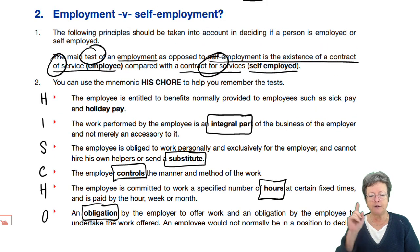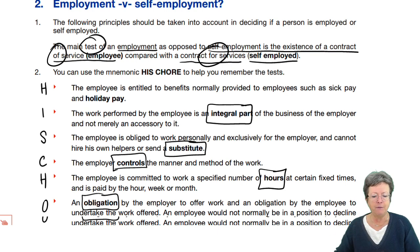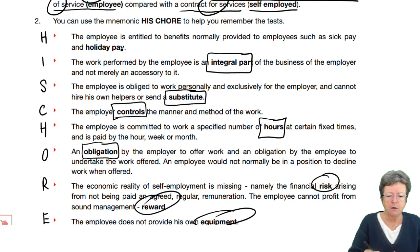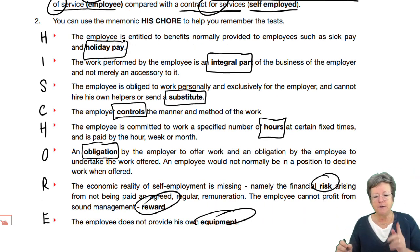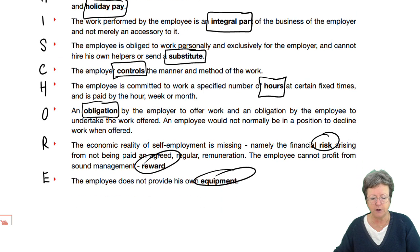So these are the two main things you need to be aware of: contract of services for an employee, contract for services for self-employed — and then this mnemonic: Holiday pay, Integral part, Substitute, Control, Hours, Obligation, Risk/Reward, and Equipment.